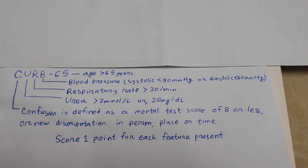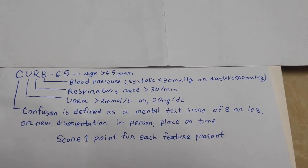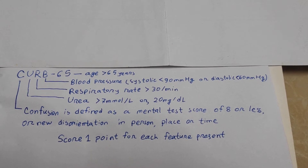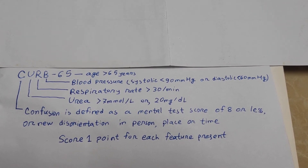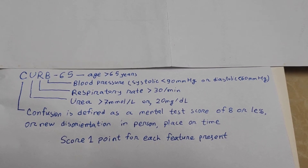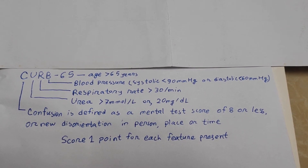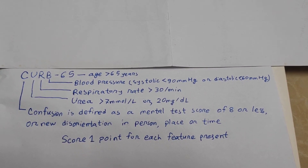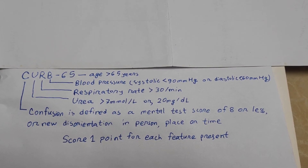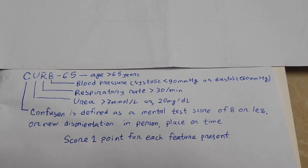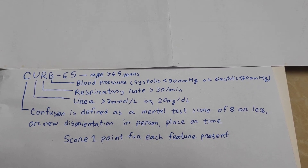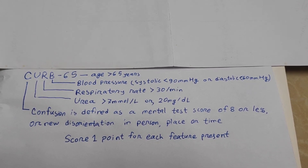There are five features of the CURB-65 score, one point for each feature present. C is for confusion, which is defined as a mental test score of 8 or less, or new disorientation in person, place, or time.